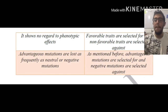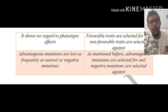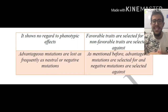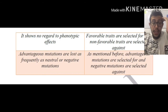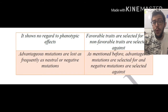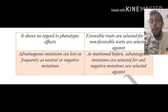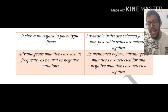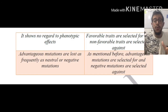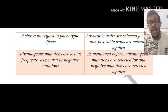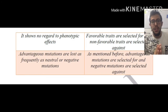Advantageous mutations are lost as frequently as neutral or negative mutations in genetic drift, which goes back to the point that chance plays the major role — it does not matter what the phenotypic or genotypic frequencies of a particular population are. As for natural selection, advantageous mutations are positively selected and negative mutations are negatively selected, meaning populations with favorable mutations are going to be surviving and prospering, whereas those with negative mutations are going to experience detrimental effects.